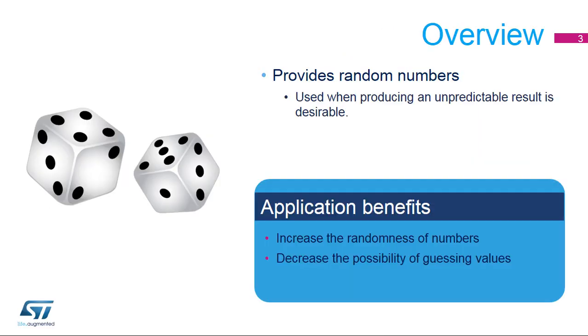The Random Number Generator, or RNG, integrated inside STM32 products provides random numbers which are used when predicting an unpredictable result is desirable. Applications can benefit from the RNG to increase the randomness of numbers or to decrease the possibility of guessing certain values.